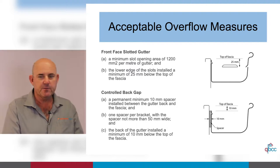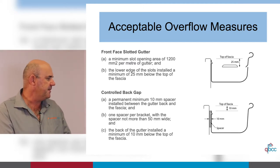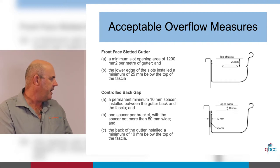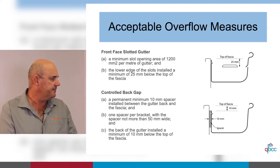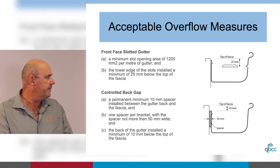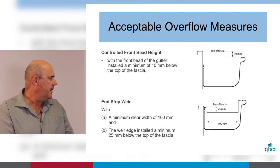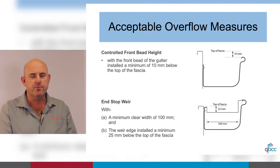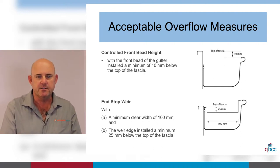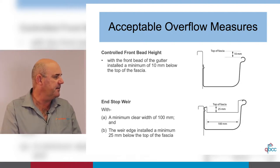There's a controlled back gap, which is becoming more popular now. That's created by installing a 10mm spacer behind the gutter, installed at every gutter bracket. The back of the gutter is installed a minimum of 10mm below the top of the fascia. There's also a controlled front bead height, which gets used in a lot of custom folded gutters where we can't put slots in — for example, a specially designed gutter that's folded up like a flashing.